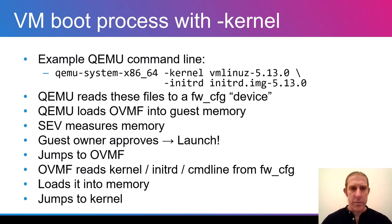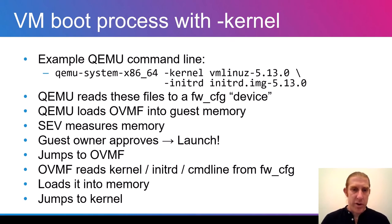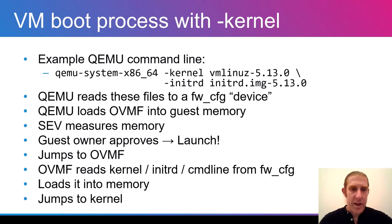Let's walk over a normal VM boot process with the dash-kernel argument to QEMU or dash-initrd. Here's an example QEMU command line for initializing such a VM. What happens inside QEMU is that it reads those files into the firmware config device, then loads OVMF — the firmware that runs inside the VM — into the guest memory. It instructs SEV to measure the memory, and this measurement is reported to the guest owner. The guest owner then approves the measurement and tells the cloud provider or QEMU to launch the VM. Then the VM starts running with OVMF code, and OVMF reads the content of the kernel, initrd, and kernel command line from the firmware config device, loads them into memory, and jumps to the kernel to continue the boot process.